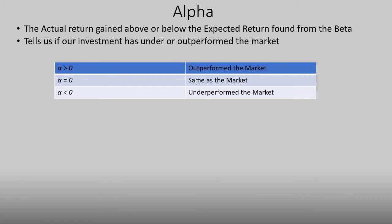Another reason we calculated beta is because it allows us to calculate a stock's alpha. Alpha is simply the actual return you received minus the expected return found using the stock's beta. If you're able to generate a positive alpha, you're beating the market — making more money than if you had invested in the market portfolio. An alpha equal to zero means you're just making what the market portfolio could have offered. A negative alpha means you're underperforming the market and would be better off investing in the market portfolio.